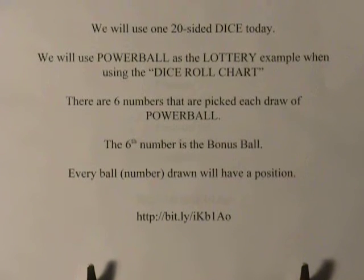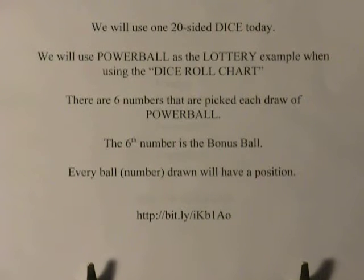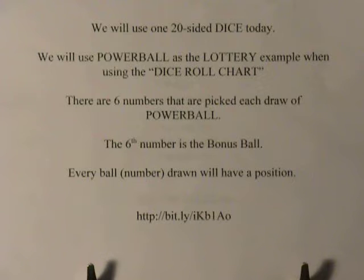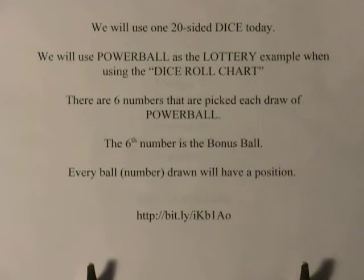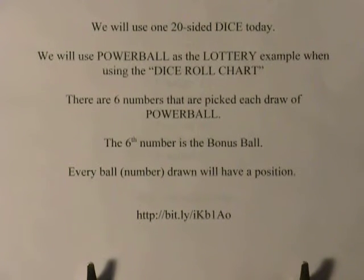We'll use one 20-sided dice today and use Powerball as a lottery example when demonstrating the dice roll chart. There are six numbers picked each draw of Powerball, and the sixth number is the power or bonus ball.